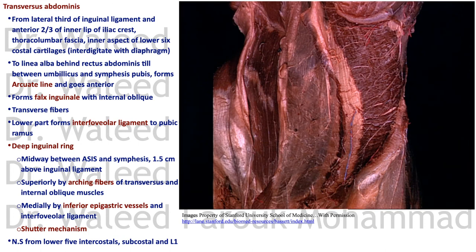The last muscle is the transversus abdominis, taking origin from the inner surface of the lower costal cartilages — interdigitating with the diaphragm — from the thoracolumbar fascia, from the lateral third of the inguinal ligament, and the anterior two-thirds of the inner lip of the iliac crest. Its fibers run transversely. In the upper abdomen it passes behind the rectus abdominis and inserts into the linea alba, but below it forms the arcuate line where its fibers redirect anteriorly.